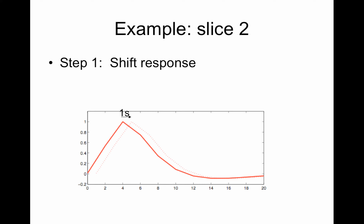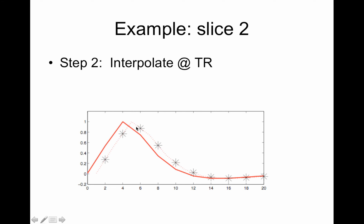To match things up, we're going to shift it forward a second — the dotted line is the shifted one, the solid is the original. Now the problem is I've shifted this up a second so my data no longer lie on the TR, which is every two seconds. So you interpolate — the stars show where the interpolated values are, and then you connect those dots and this is your repaired time course. Now all of the peaks, if you do this for all the slices, will occur at the same point in time and the model will fit all slices equally well.